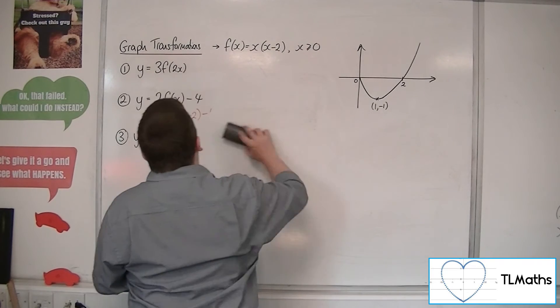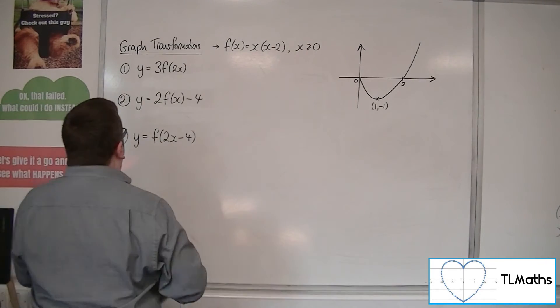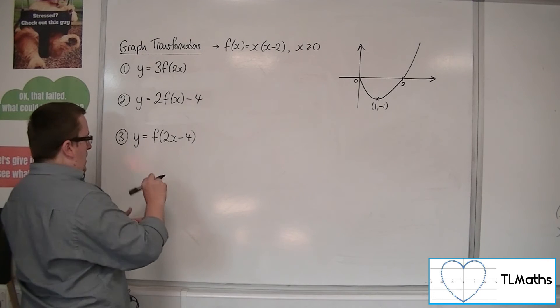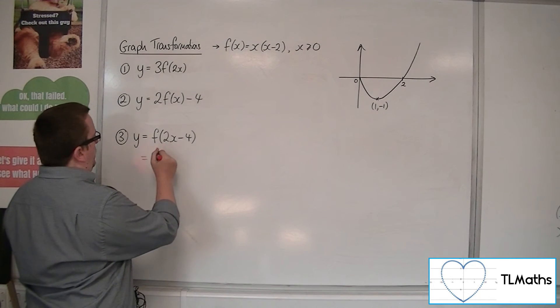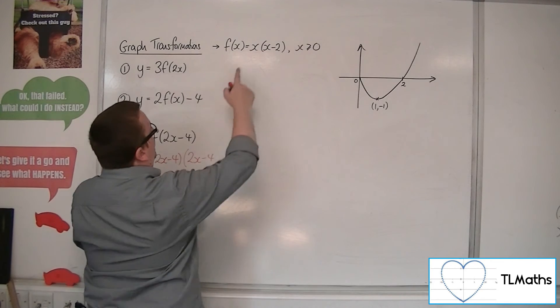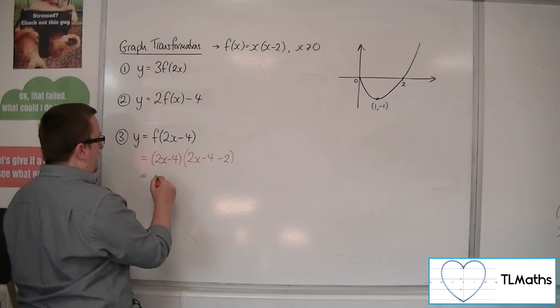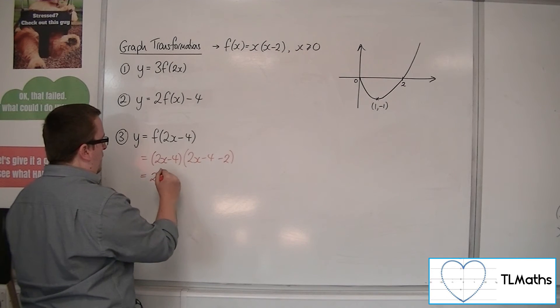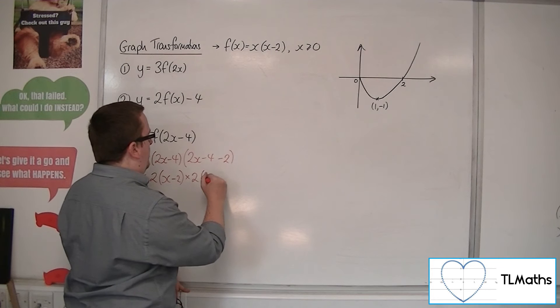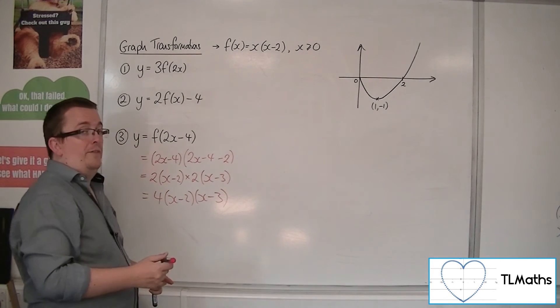Last but not least, we've got number 3. Y equals f of 2x minus 4, so the x here has been replaced with 2x minus 4. Let's do it within the equation itself. We've got 2x minus 4, that's now the x up front, and we've got 2x minus 4, that's the x within the bracket, take away 2. So we've got 2x minus 4. If I factor a 2 out of that bracket, and then we've got 2x minus 6 here, if I factor a 2 out of the bracket here, I've got x minus 3. So that's 4 lots of x minus 2 times x minus 3 in factorized form.